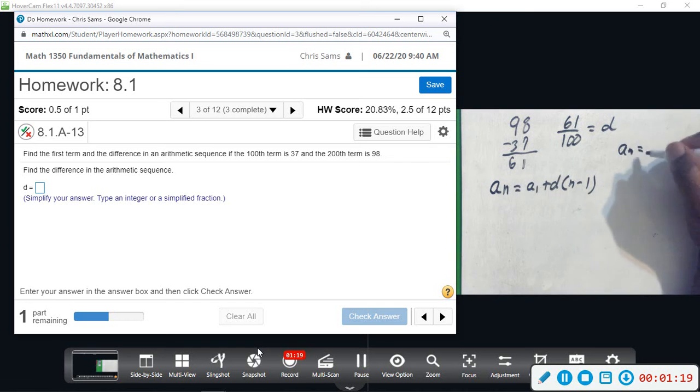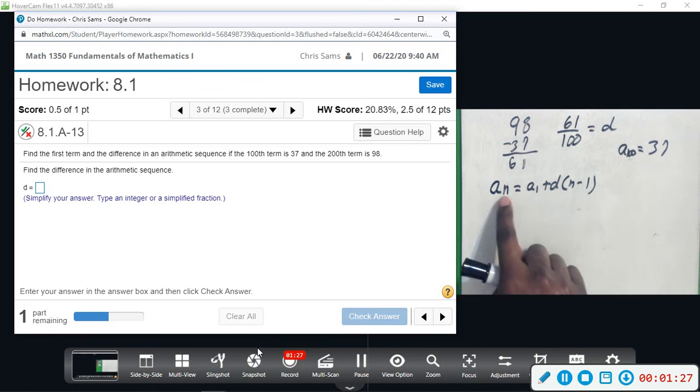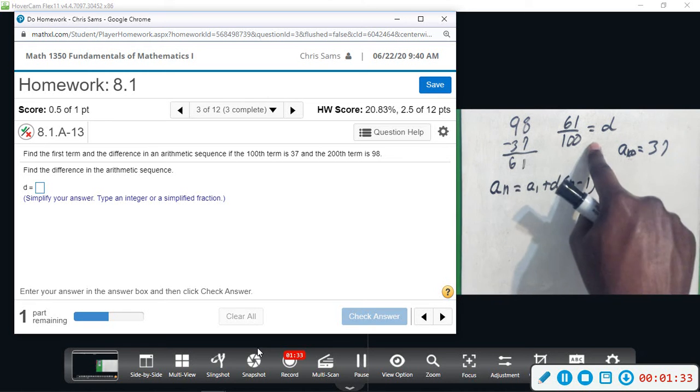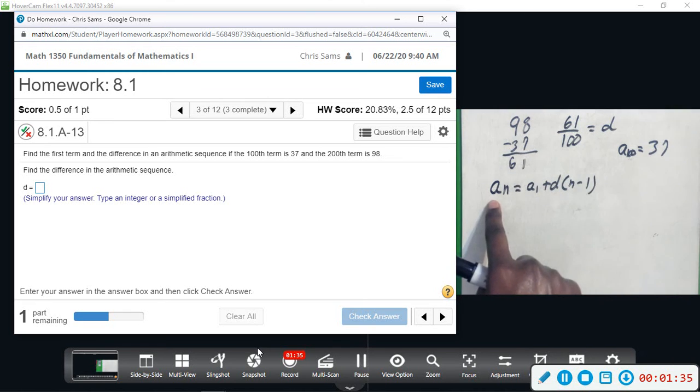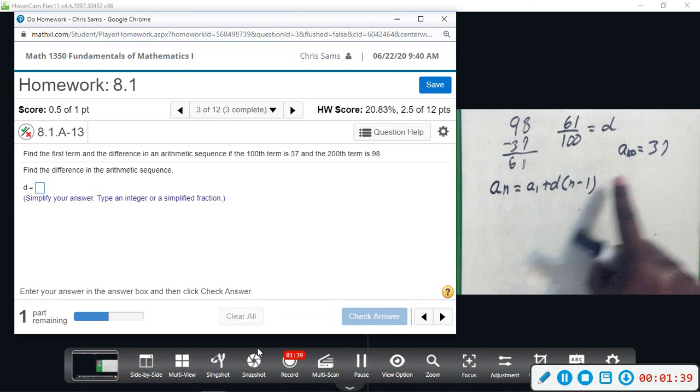So a_100, because we were told the 100th term was equal to 37. So n is going to be 100. When I do 100 minus 1, this is going to be 99. So I can plug in d, a_n for 100, and I will be able to figure out a_1.